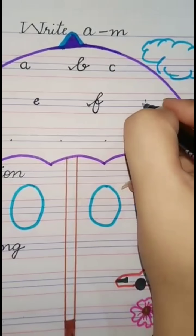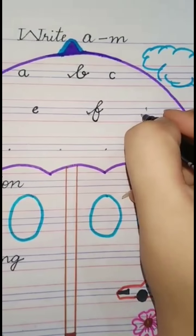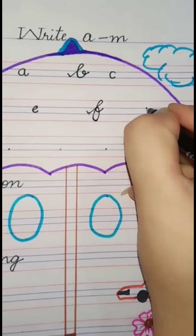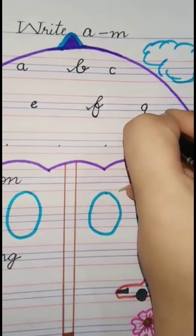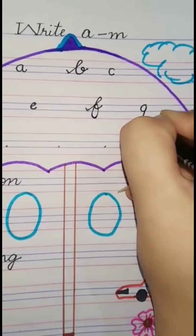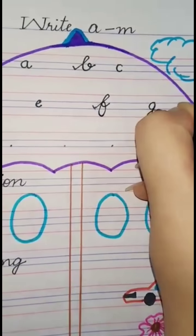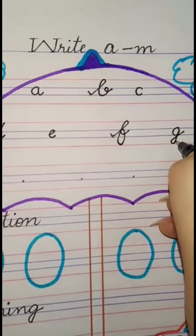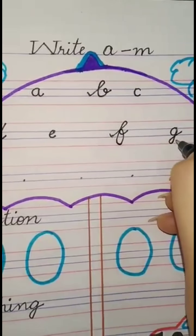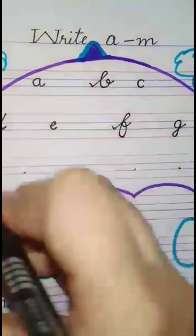Next word is ga. Firstly you make a kha, join, come down, make a curve, go up with a slant line, and cut it on the third line. Ga - Got.